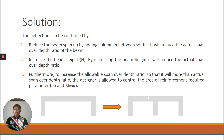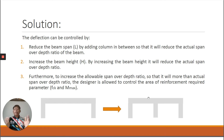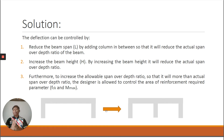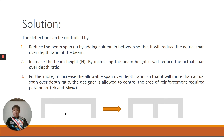Based on my experience, here are my suggestions. First, reduce the beam span L by adding a column in between, so it will reduce the actual span-to-depth ratio. This changes two support columns into three, reducing the beam length and giving a smaller actual deflection. Second, increase the beam height H. By increasing beam height, it reduces the actual L/D ratio. If we cannot decrease the beam span, we increase the height, which increases the effective depth D and reduces L/D actual.